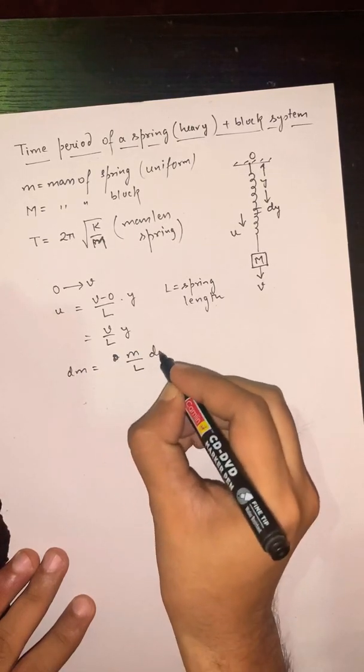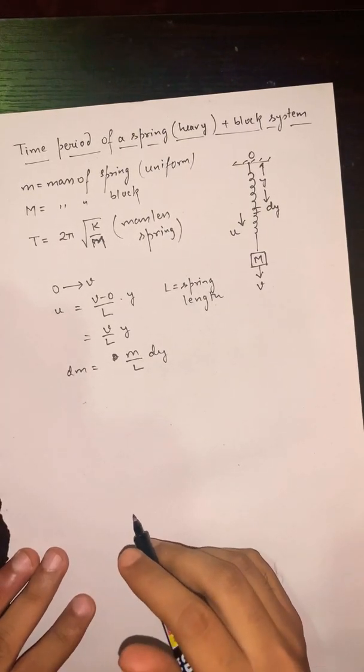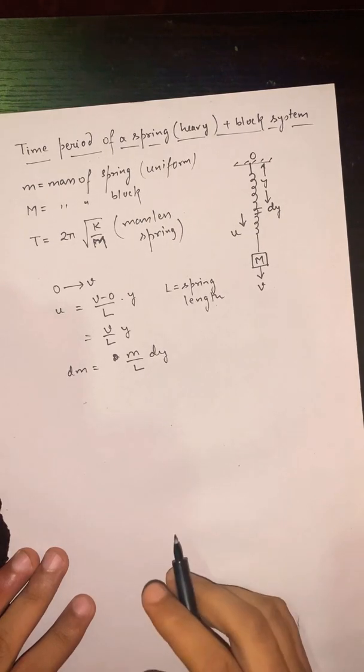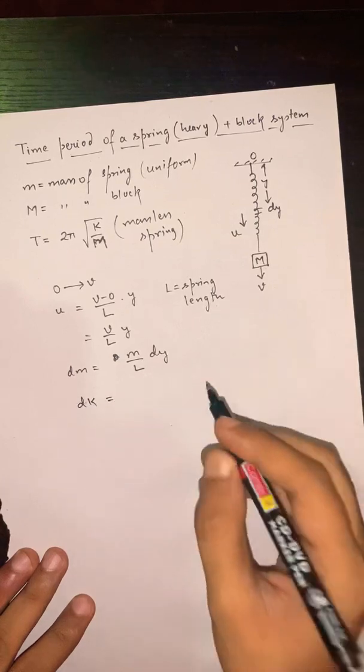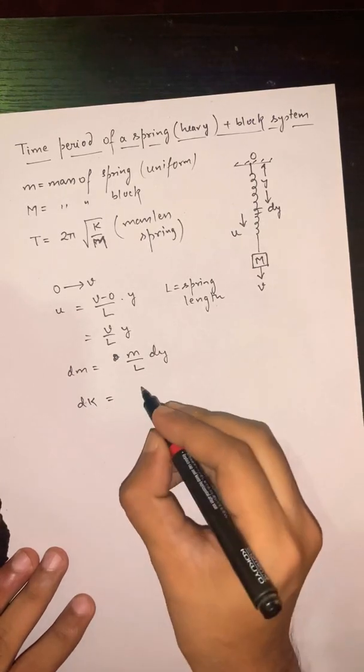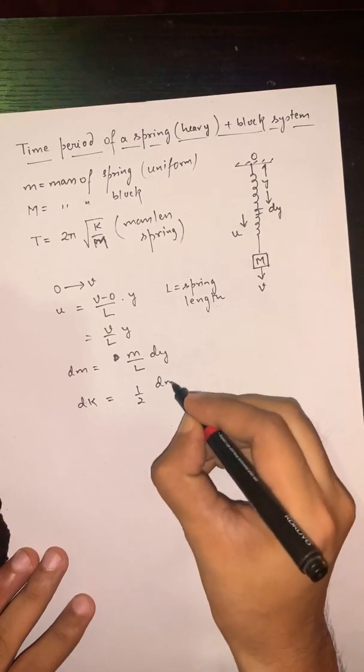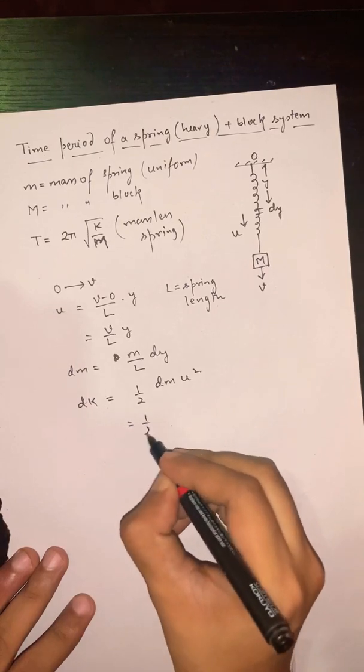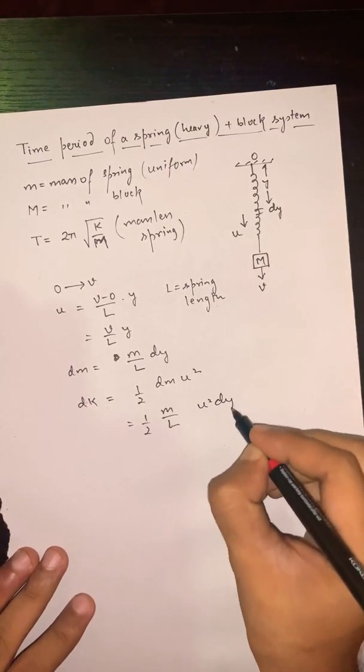Let dk be the kinetic energy of that element of the spring, which will be ½dm × u². dm is m/L × dy, so dk = ½(m/L)u² dy.